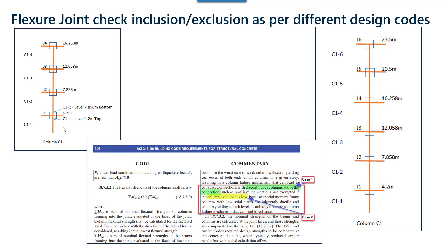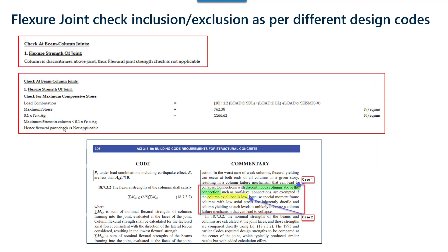ACI 2019 code has two criteria for performing the joint flexure check. Criteria number 1 is if the joint has no column above it — that is, if the column is discontinuous above the joint — then the joint flexure check has to be avoided. When there is no column above a considered joint, the message shown is 'column is discontinuous' and the flexural joint check is ignored.